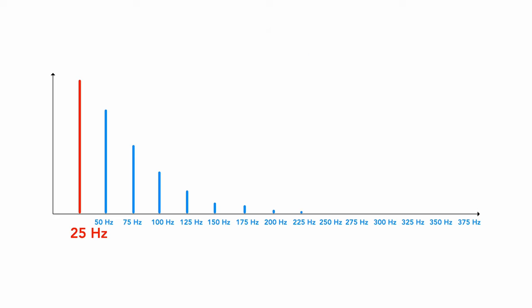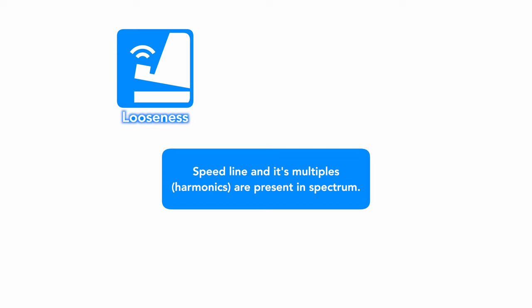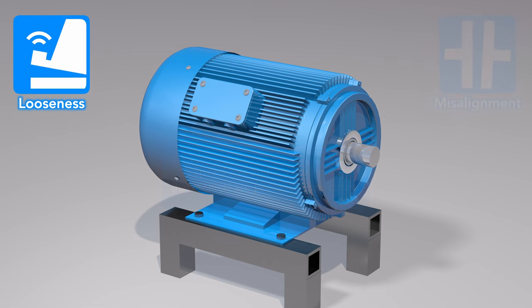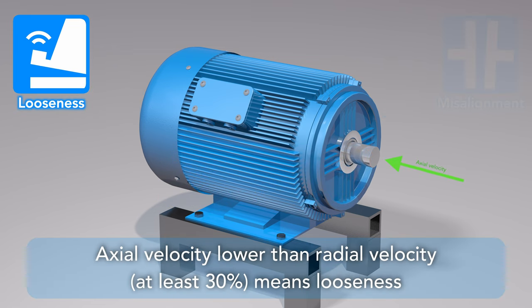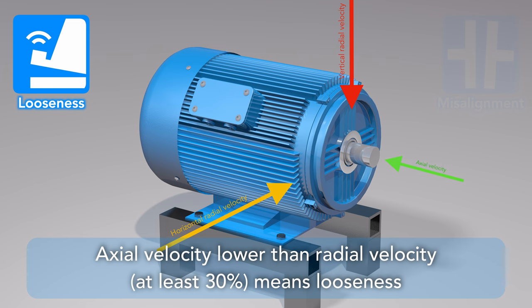If the speed line and its multiples are present in the spectrum, the fault is looseness, or misalignment. Axial velocity values significantly lower than the radial values, e.g. less than 30% of the radial value, suggest looseness.